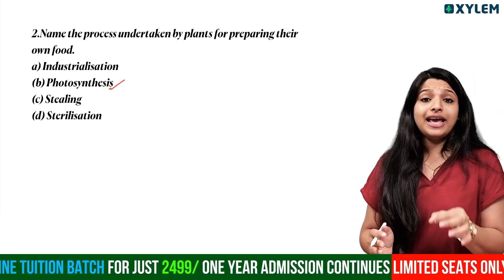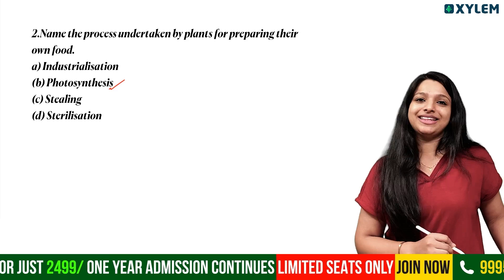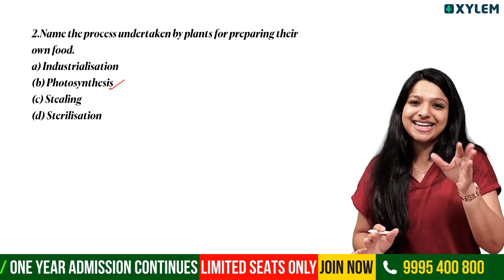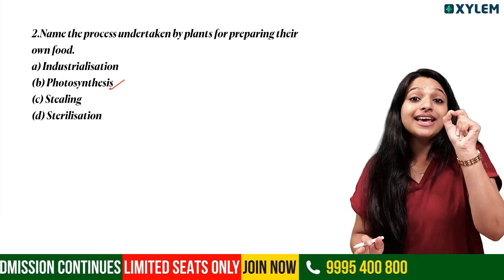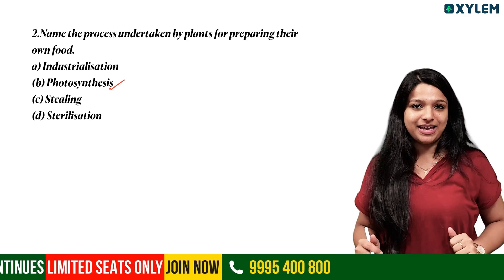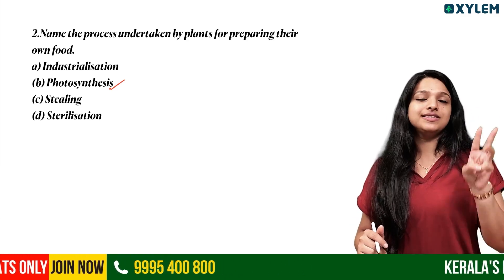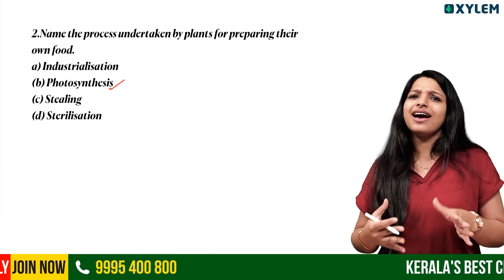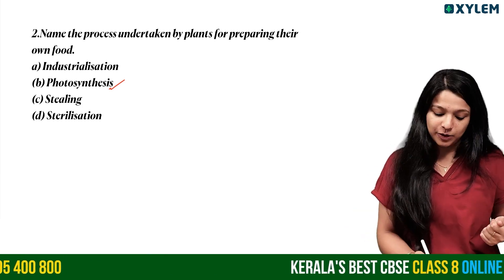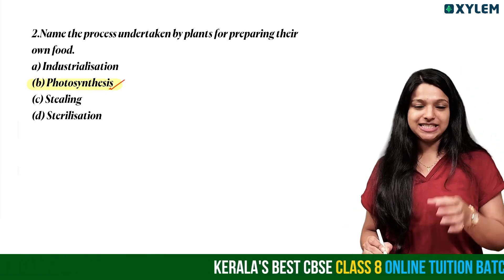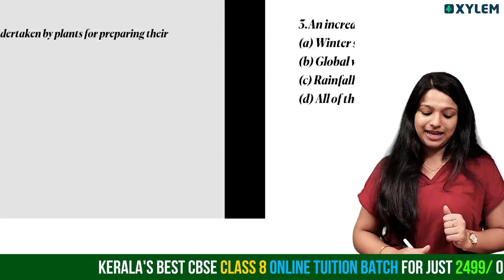Second question: Name the process undertaken by plants for preparing their food. Plants prepare food through this process. The correct answer is photosynthesis — food is prepared by plants through photosynthesis.